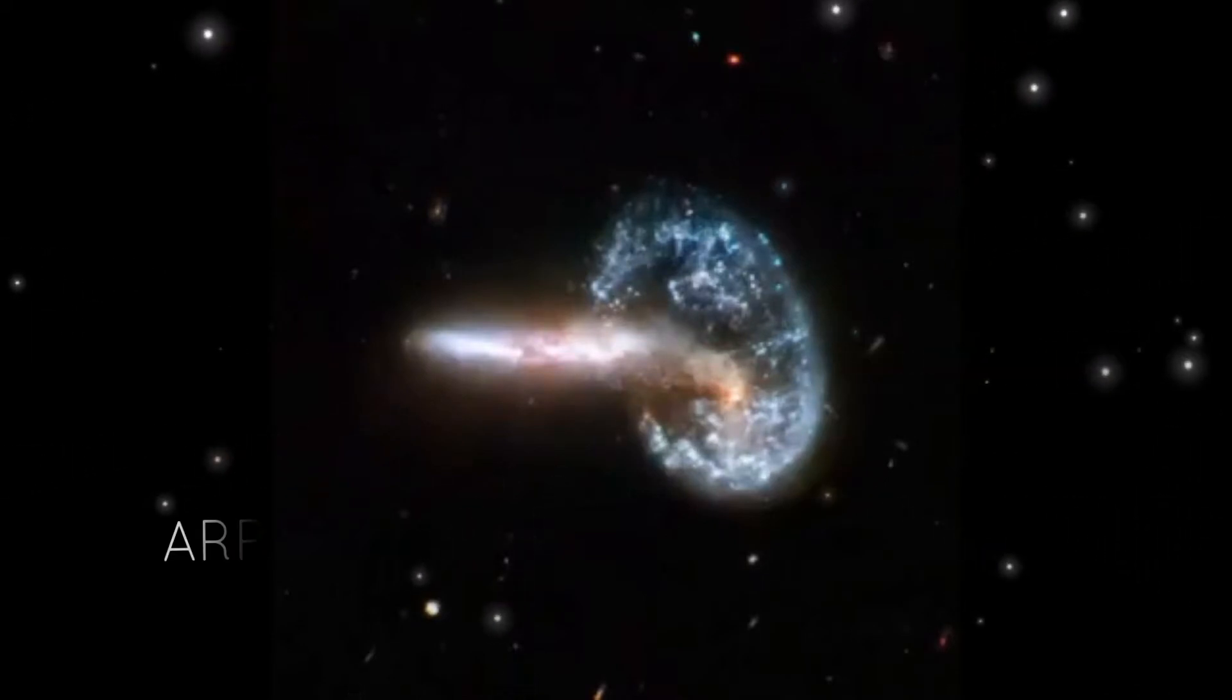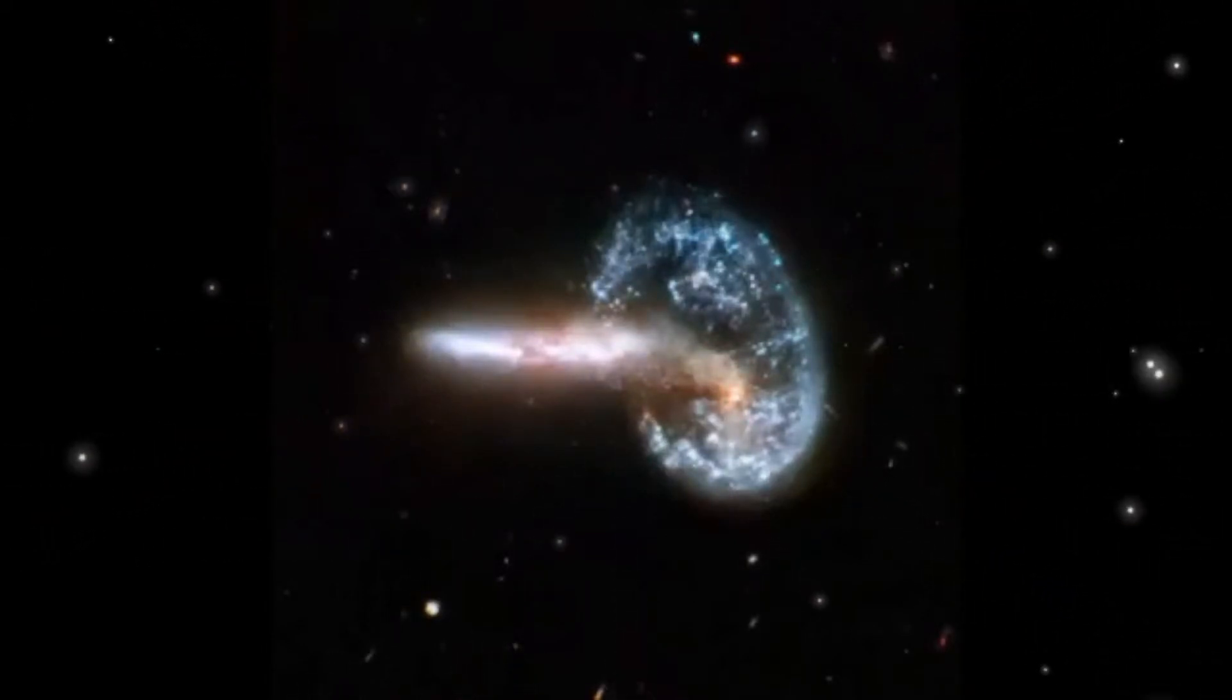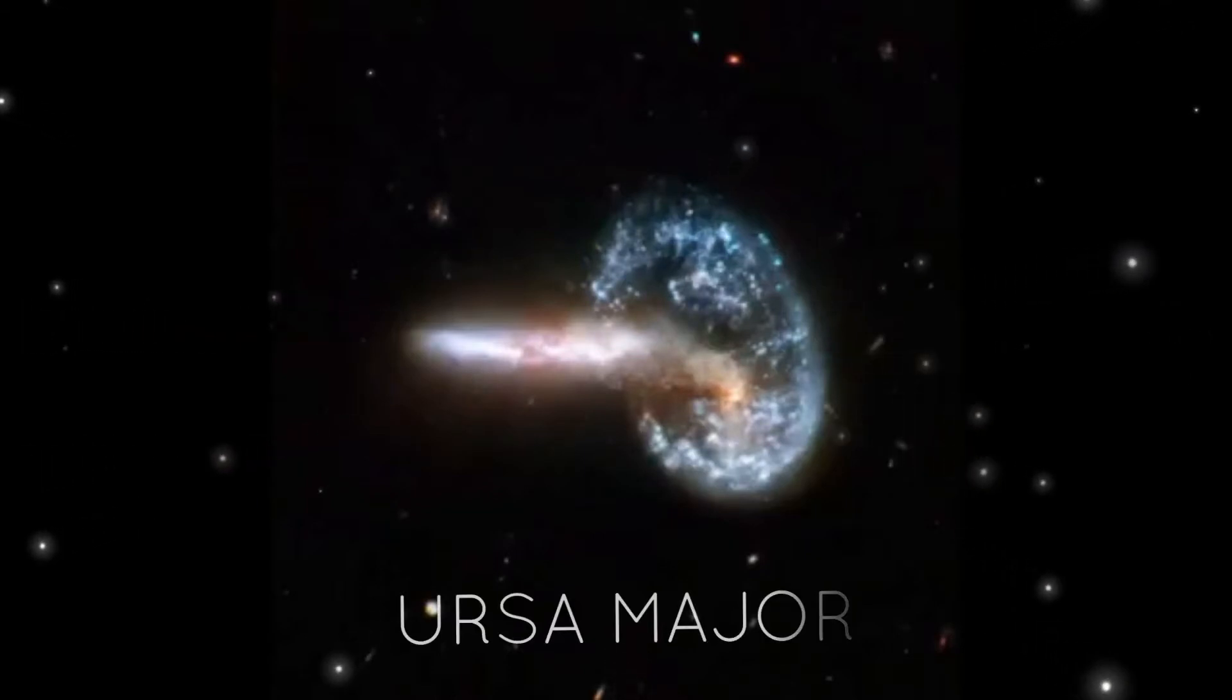Arp 148, also known as Meel's Object, is the result of two colliding galaxies located 500 million light-years away within the constellation of Ursa Major.